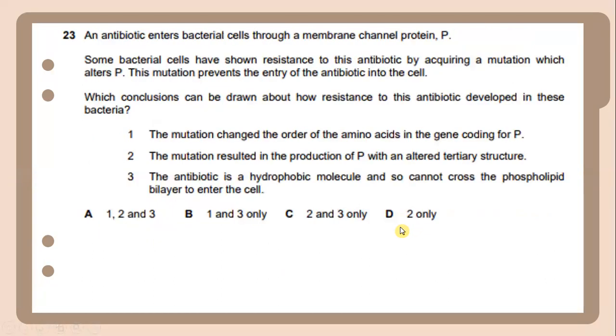An antibiotic enters bacterial cells through a membrane channel protein. Some bacterial cells have shown resistance to this antibiotic by acquiring a mutation which alters this protein. This mutation will prevent the entry of the antibiotic into the cells. Which conclusion can be drawn about how resistance to this antibiotic developed in this bacteria? The answer will be the mutation resulted in the production of protein with an altered tertiary structure.